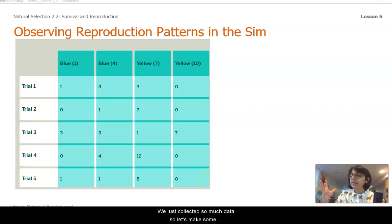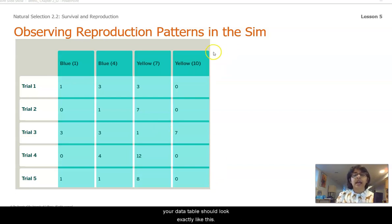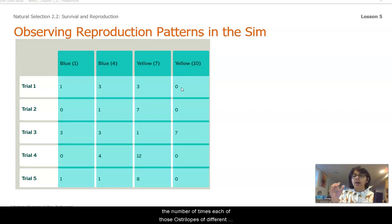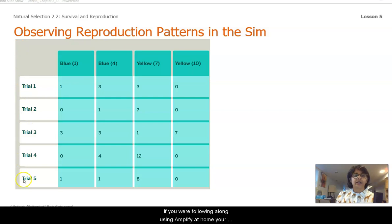We just collected so much data, so let's make some sense out of this data and be able to identify some of the trends and patterns that we have seen so far. I've now filled in the data table with all the numbers that we collected for the number of times each of those Australopes of different colors we produced. If you were following along with me, your data table should look exactly like this.